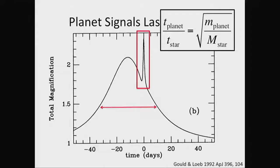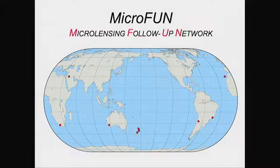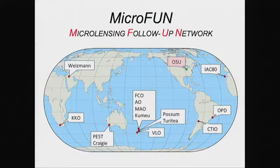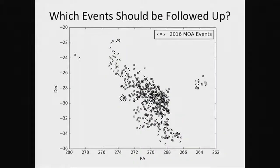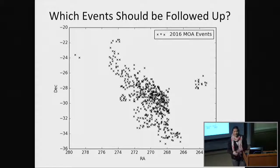Clearly, a cadence of once per night is insufficient to resolve caustic crossings or planetary signals. Gould and Loeb advocated a two-phase approach: first, survey groups like MOA and OGLE, and then a network of telescopes to follow up specific events. I ran the MicroFun Network, which had about a dozen active members spread across the globe, especially concentrated in New Zealand, a hotbed of amateur astronomy. The question then becomes: which events should we follow up? Hundreds of microlensing events are observed every year, and since we were working with amateurs who had day jobs, we had to pick favorites.